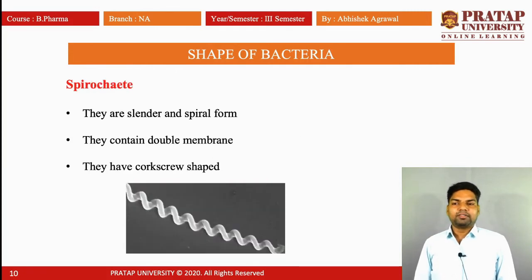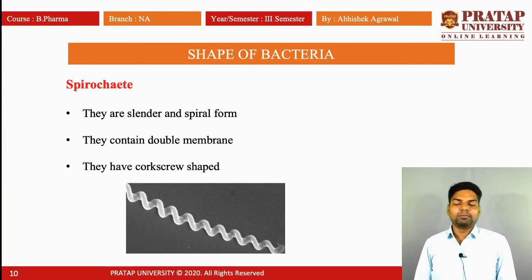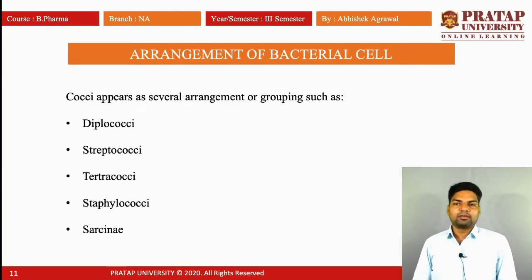Fifth is spirochetes. They are cylindrical and spiral in form. They contain a double membrane, which is called diderm. They have a corkscrew shape, like a spring.